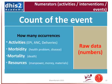The count of the event — this is going to be the numerator. We're looking at how many occurrences, so this can be activities, morbidity, mortality, resources, or raw data. A lot of the time in the numerators we're looking at throwing in a very specific data element, or we could do a comparison or arithmetic based on data elements — we could have one data element minus another, or multiplied by another — but oftentimes we're bringing in the data elements themselves to be these numerators.